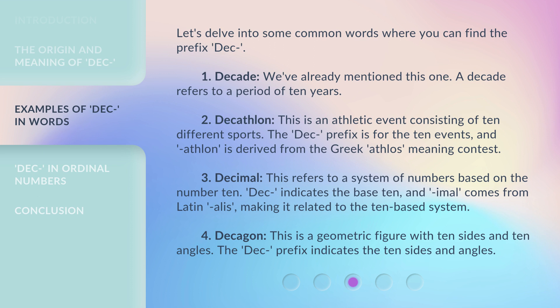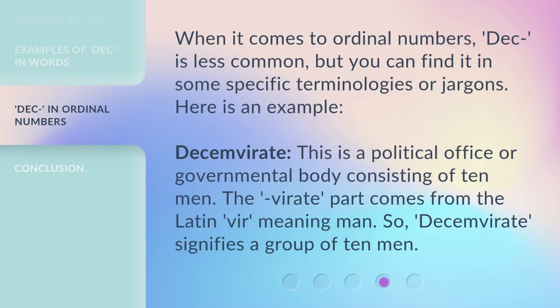Fourth: DECAGON. This is a geometric figure with 10 sides and 10 angles. Fifth: DECEMVIR. This is a political office or governmental body consisting of 10 men. Sixth: DECEMVIR. The -VIR part comes from the Latin VIR, meaning man. So, DECEMVIR signifies a group of 10 men.